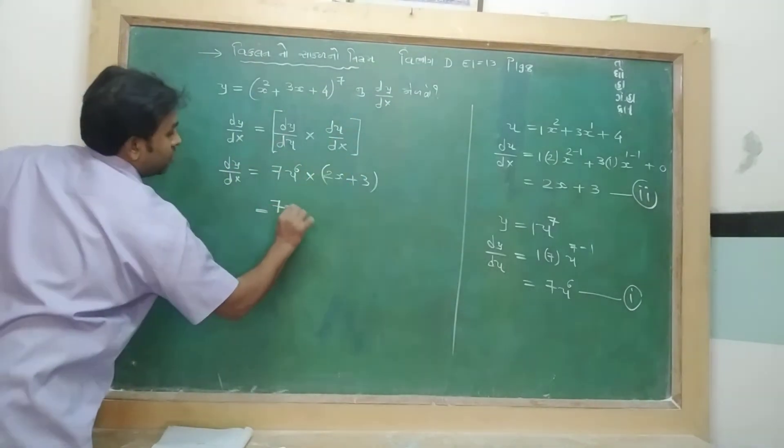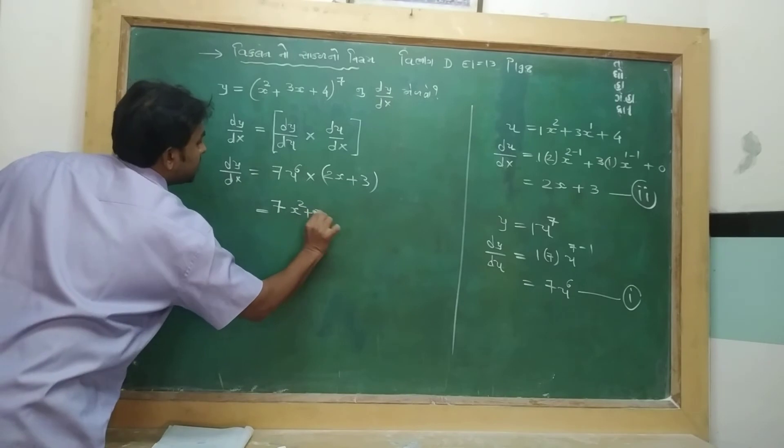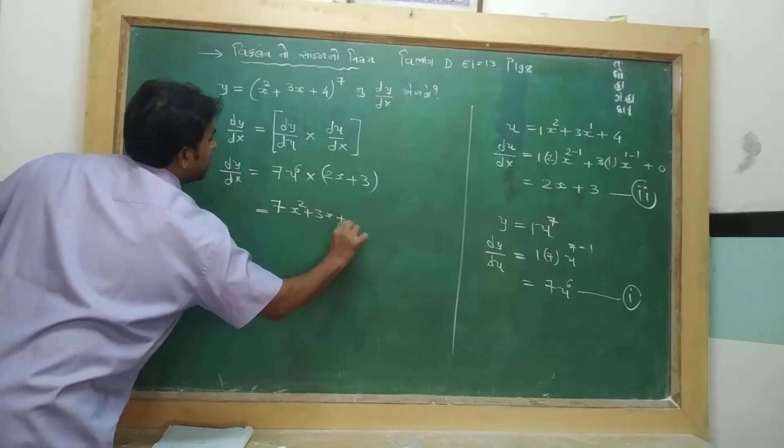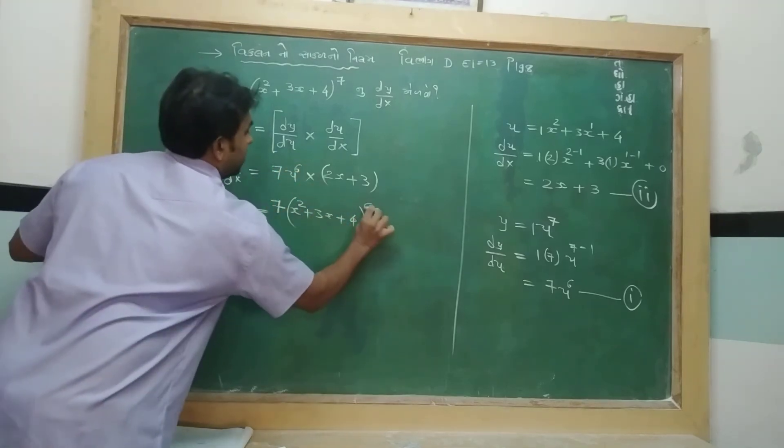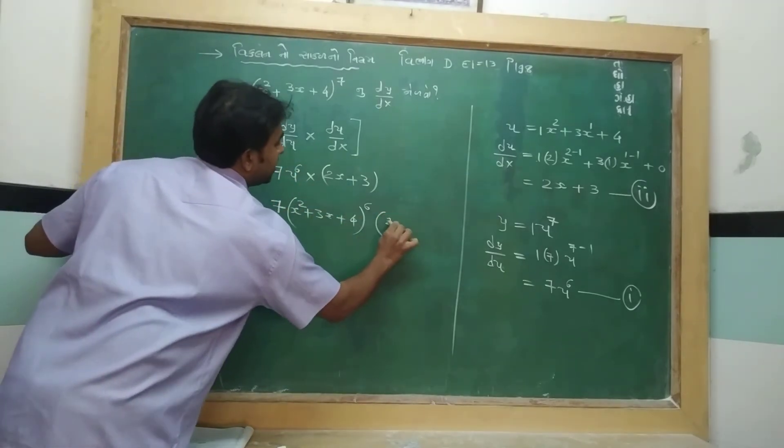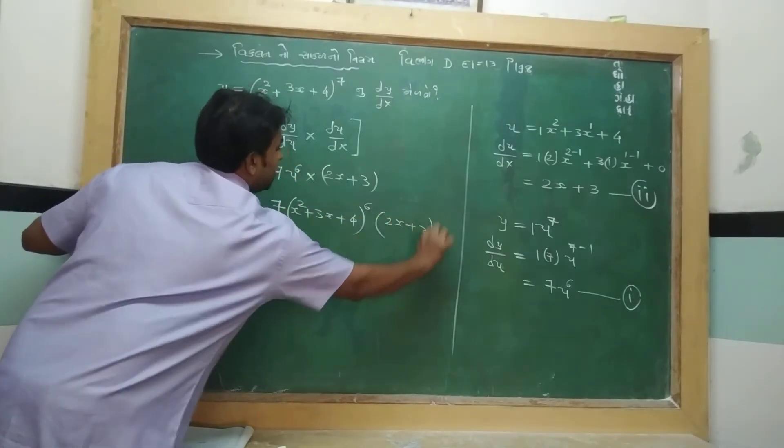u is x squared plus 3x plus 4, to the 6 power. And we have a bracket.